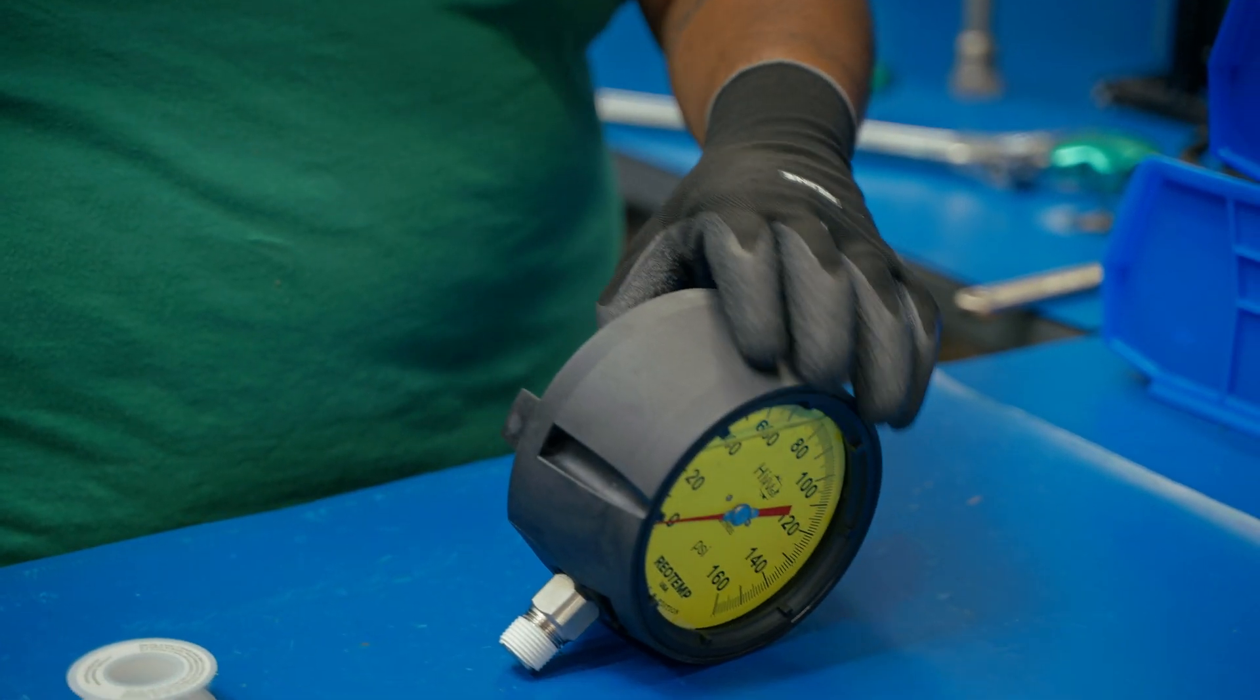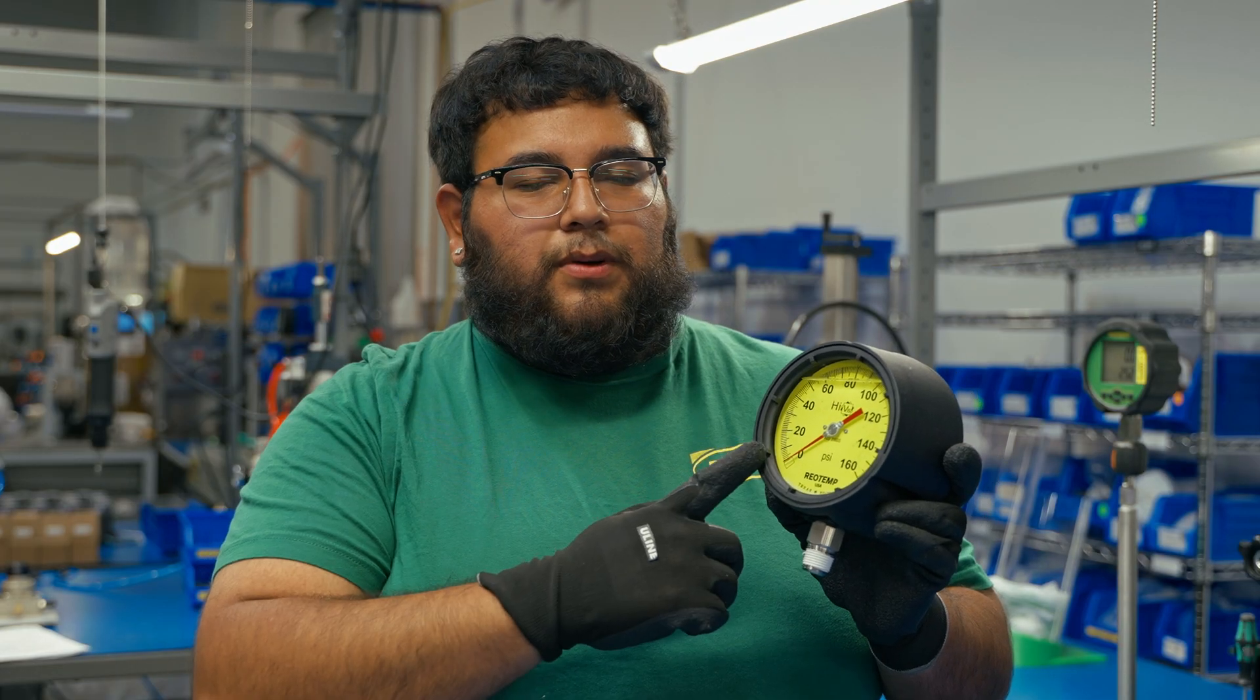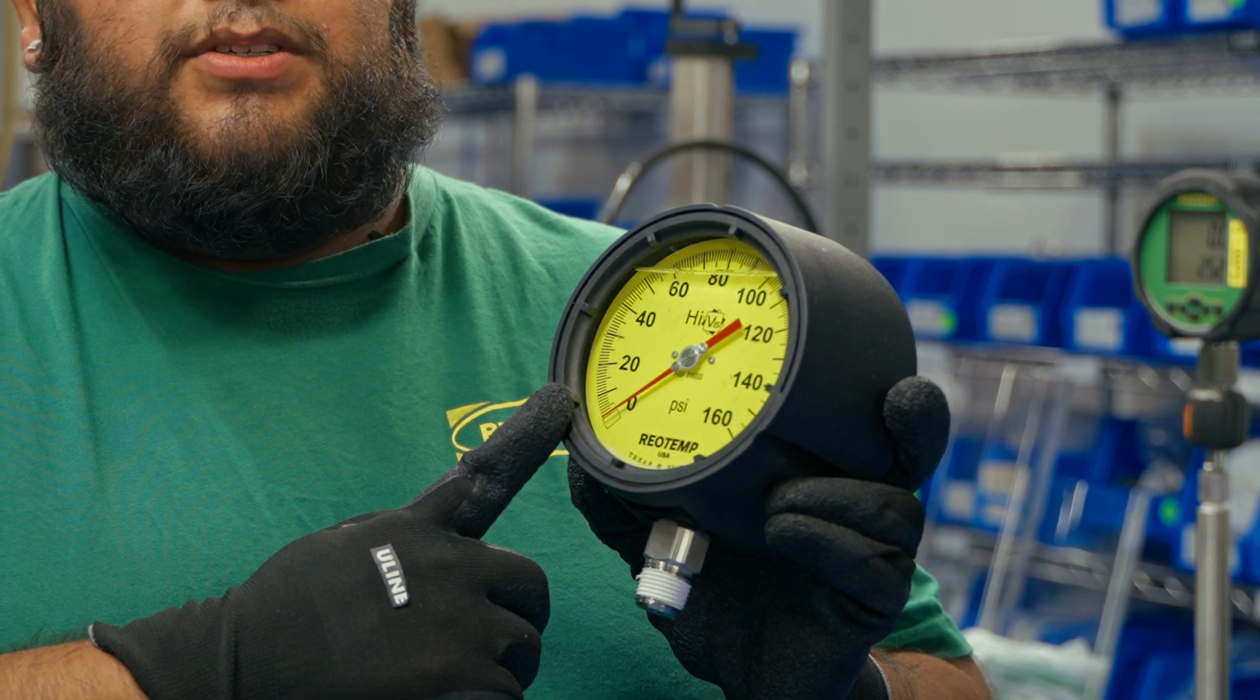Align the dial so it's easy to read. With your new gauge verify zero at ambient pressure. Your gauge is now good to go.